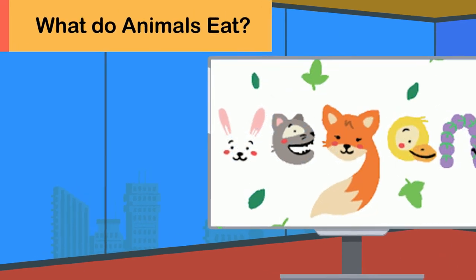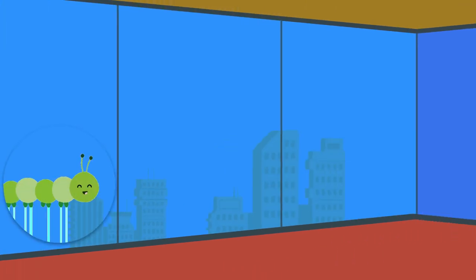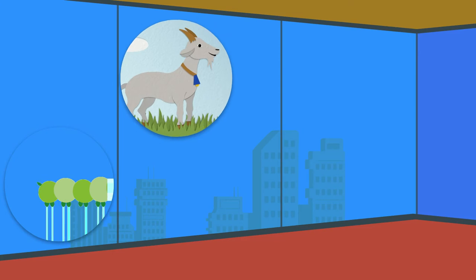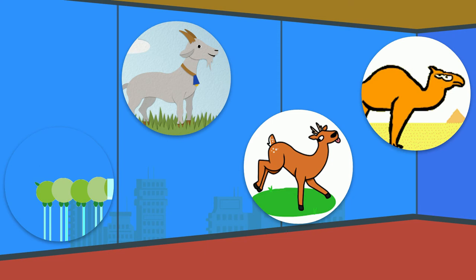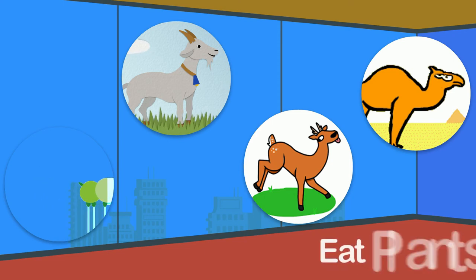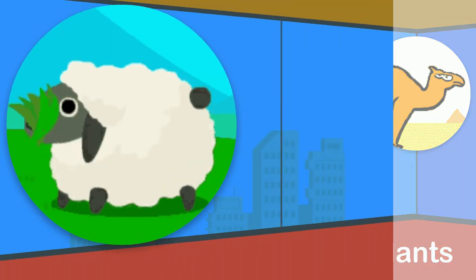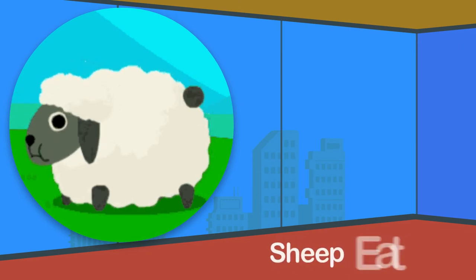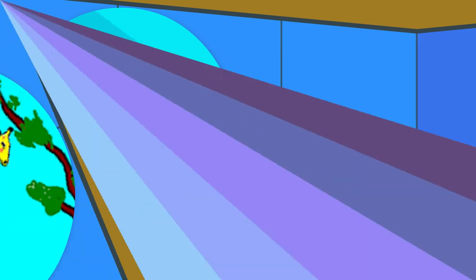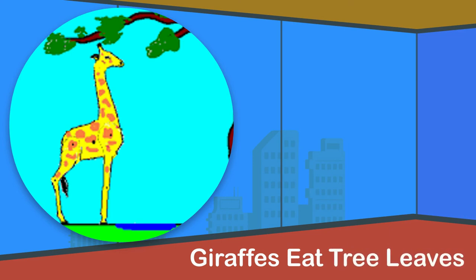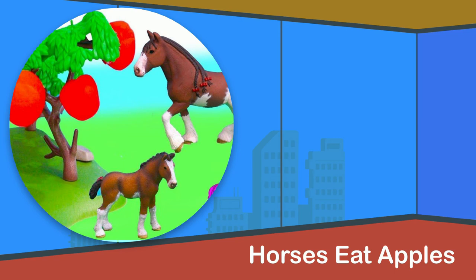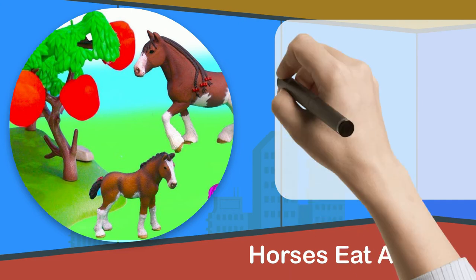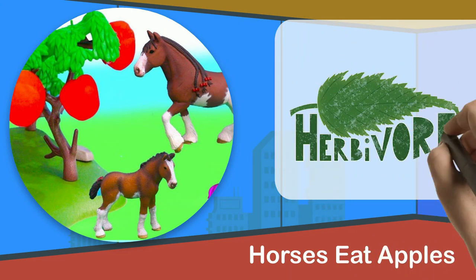What do animals eat? Some animals such as caterpillars, goats, deer, and camels eat plants. For example, sheep eat grass. Giraffes eat tree leaves and horses eat apples. All plant-eating animals are known as herbivores.